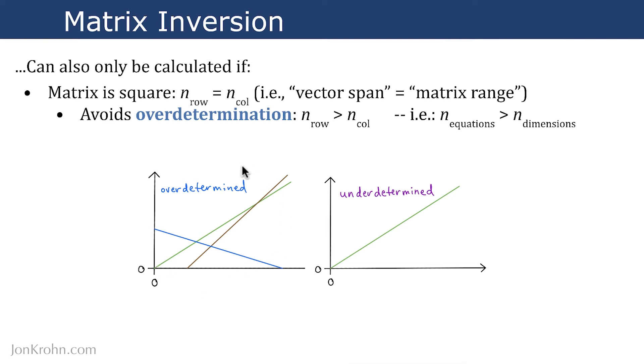That is, the number of linear equations is greater than the number of dimensions in our set of linear equations. So here's an example of an overdetermined system where we only have two dimensions. So there's only two columns in the linear system, but there are three rows. We have three lines. And so we can't solve for a single point where these lines overlap because there are multiple points. There's three points. So there's not one single answer. We can't calculate the matrix inverse.